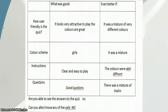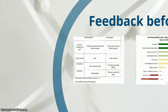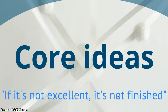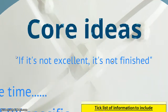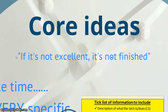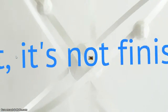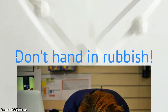What we're going to look at now are some of the core tenets of what we call public critique and how I introduce them, in particular, with some work I'm doing with my Year 9s. The core ideas are based around this: if it's not excellent, it's not finished — which is code really for saying don't hand in any rubbish.